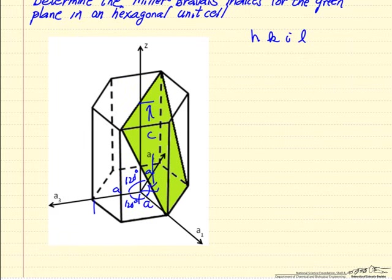So we want to determine the Miller indices by first determining the intersections of the plane with the axes. So with A1, it's a distance here, it's A.